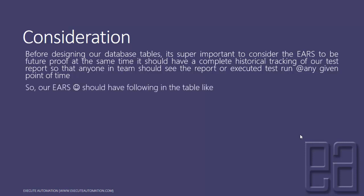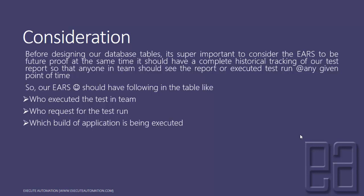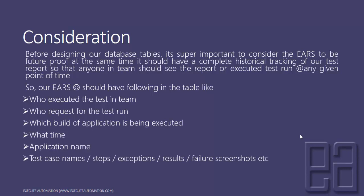Our system should capture the following in the tables: who executed the test in the team to track the historical report, who requested the test run, which build of the application is being executed, at what time it's being executed, what is the application name being inserted into our reporting system, what is the test case name, what is the exception being thrown in the application test, what is the result of the test, and whether there is any failure screenshot.